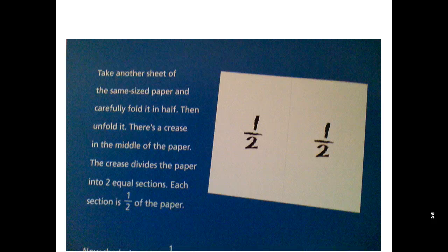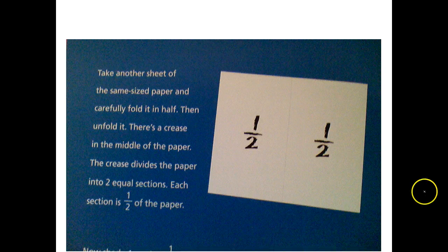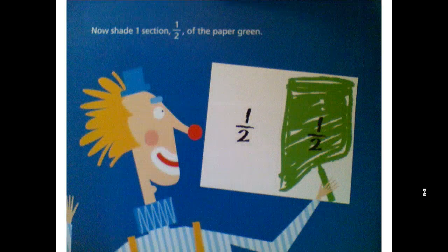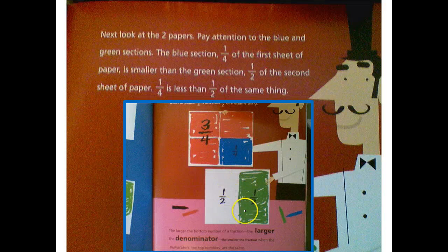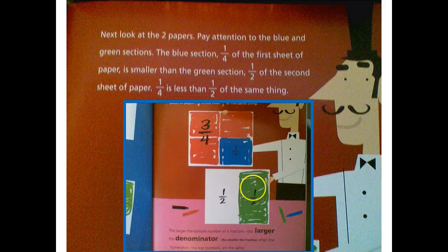Now let's take another sheet of paper. We have one-half — fold it right down the middle. One-half here and one-half here. That crease down the middle shows you each section is one-half. Let's shade one-half green. Now let's look at those two papers. We have one divided into four equal pieces and one divided into two equal pieces. The blue section, one-fourth of the first sheet, is smaller than the green section, one-half, of the second sheet. One-fourth is less than one-half.